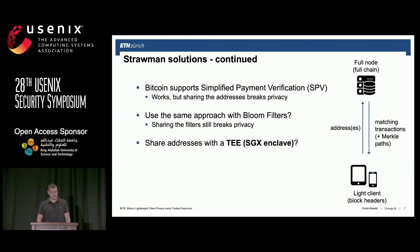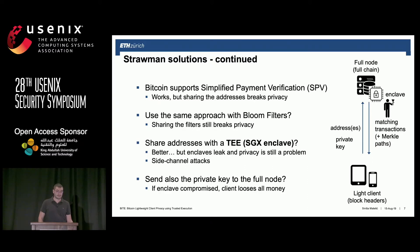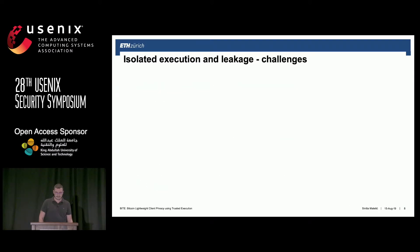Going back to the straw-man solutions: what happens if we share the addresses with a TEE, or specifically with an SGX enclave? We add an enclave and based on its characteristics it should be fine — you deliver the addresses, the enclave does the work, you get your result safely. However, enclaves still leak and privacy is a problem through side-channel attacks. If we would also deliver the private key to the full node and the enclave leaks, the client could lose all the money related to a specific wallet. So this doesn't really work out of the box.